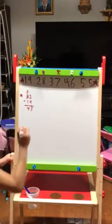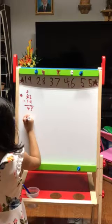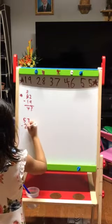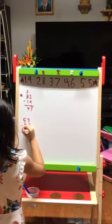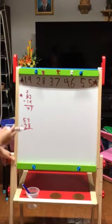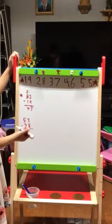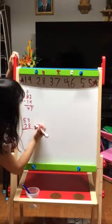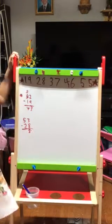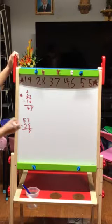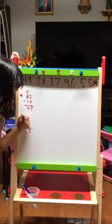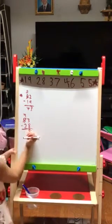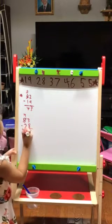The next problem is 53 minus 28. 3 can't subtract 8, so we remember 8's partner, which is 2. We add 2 to 3 and we get 5. And since we did that one time, this 5 goes down by 1 and it becomes a 4. Then 4 minus 2 equals 2.